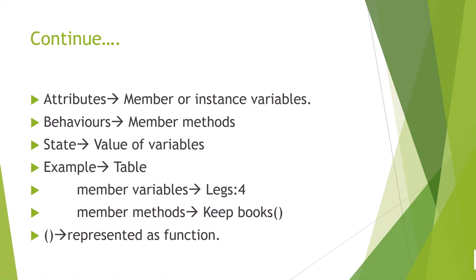Taking a table as an example: its member variable is 'legs' and the state is 4, meaning it has four legs. The member method is 'keep books' — defined as a function. When used in programming, it is represented with brackets, like a void main function. So I hope you understand what is object and what is class. Keep watching my videos and please subscribe to my channel. Thanks for watching.